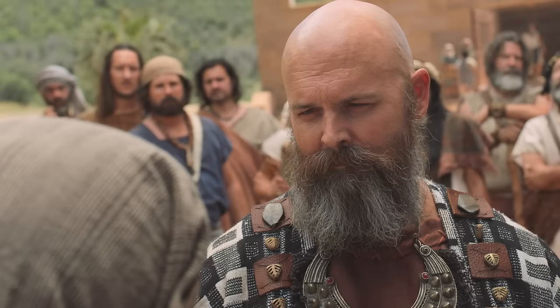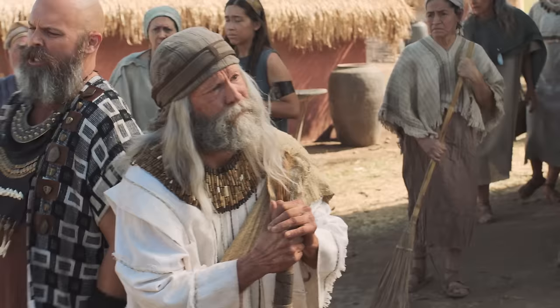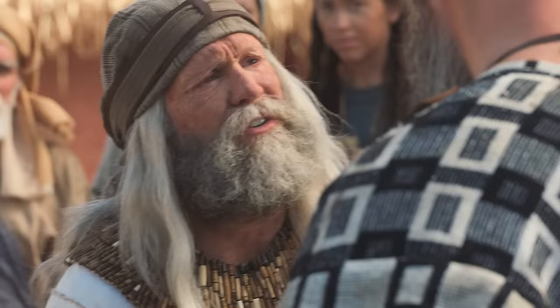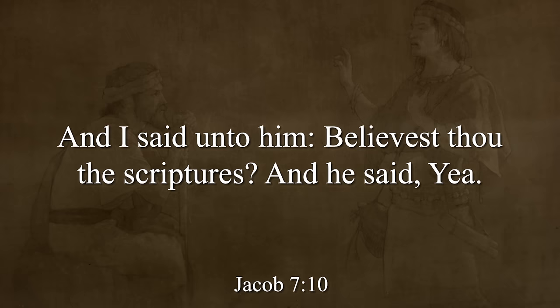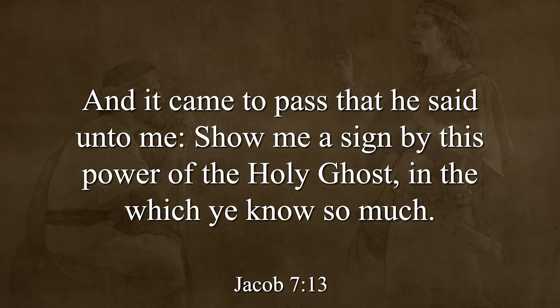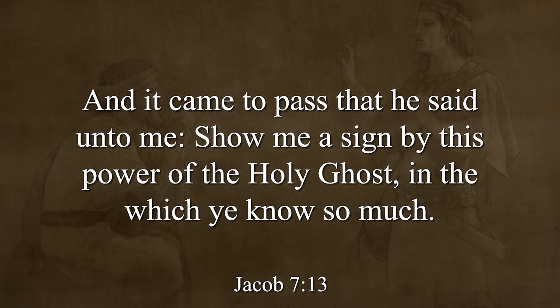Finally, Sherem says that no man can know the things Jacob is talking about, for he cannot tell of things to come. So Sherem is accusing Jacob of prophesying falsely — being a false prophet. You can be stoned for that. In Deuteronomy chapter 18, there is a law that if you prophesy falsely and the thing doesn't come to pass, the prophet shall be stoned. Sherem's logic is: if you prophesy about something happening in 500 years, how can we know whether it will come to pass? Sherem is attacking Jacob legally — his life is at stake.